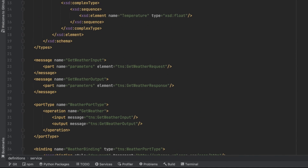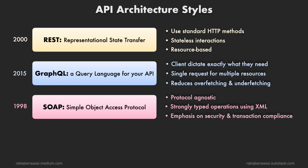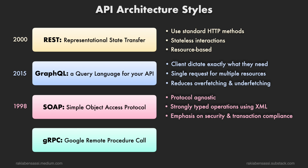The key characteristics of SOAP are: protocol agnostic — it can work over HTTP, SMTP, TCP, etc. — strongly typed operations using XML, and an emphasis on security and transaction compliance.